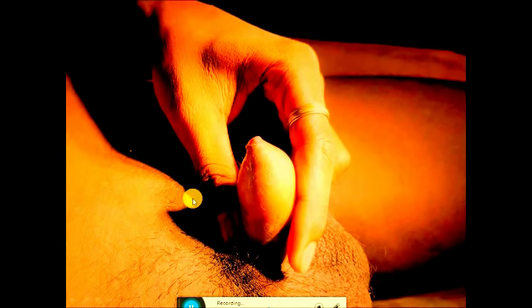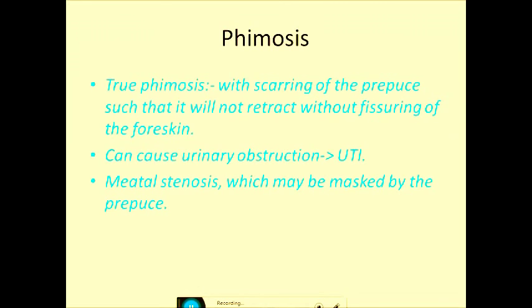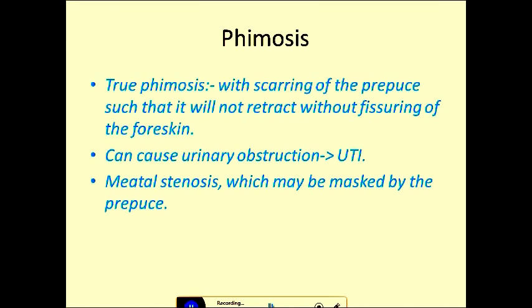In this image the glans is not visible; the foreskin is adhered anteriorly and cannot be retracted. This can lead to urinary obstruction and UTI (urinary tract infection) and various other problems. Phimosis can be true or false. False phimosis occurs in young children up to two or three years of age.